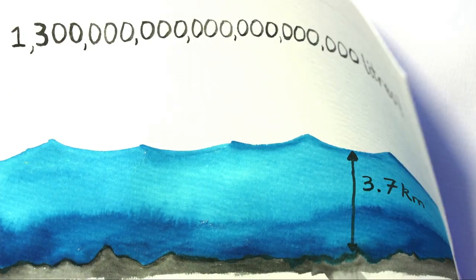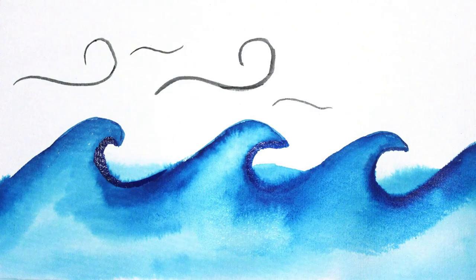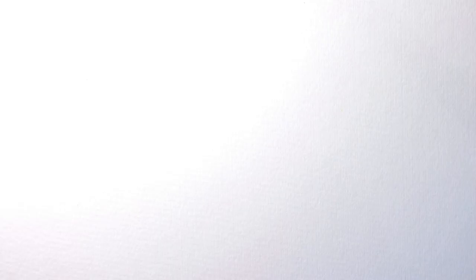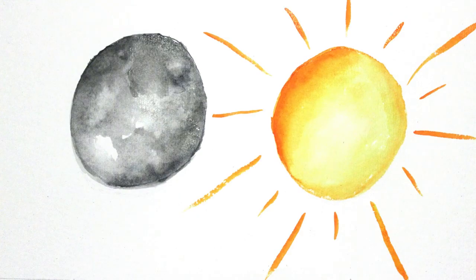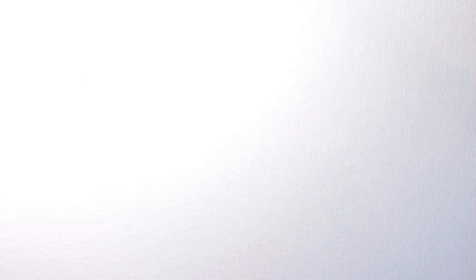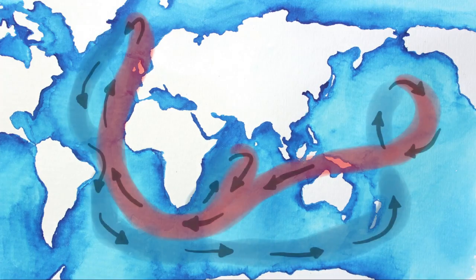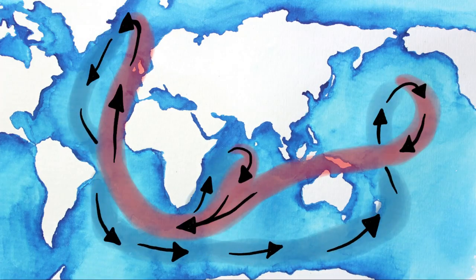Not only is the sea huge, it is also hugely dynamic. There are waves caused by the wind that affect the sea surface. There are tides caused by the gravitational pull of the moon and the sun. There are huge currents that push water around the Earth.